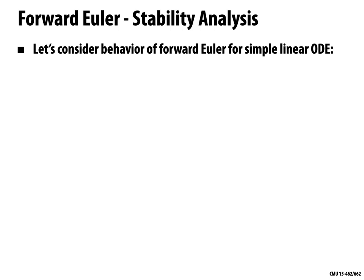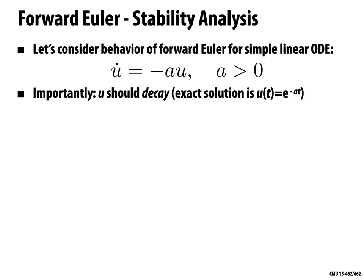To understand forward Euler's instability, let's analyze it for a simple linear ODE: u-dot equals minus a u, where a is a positive number. Importantly, u in this case should decay — and in fact we can write down the exact solution.